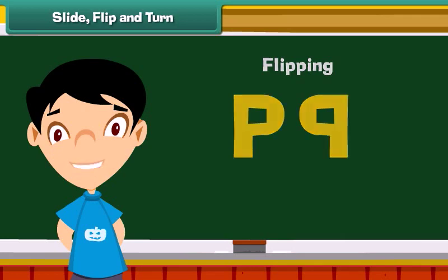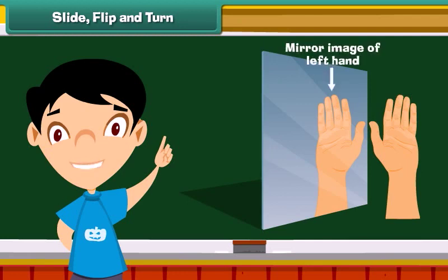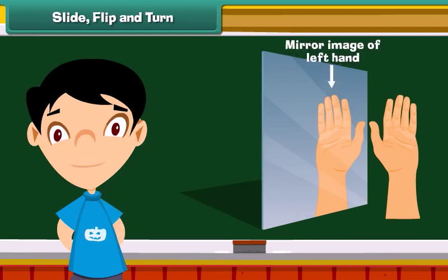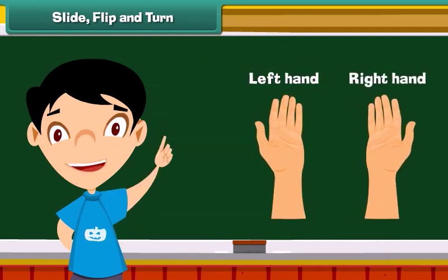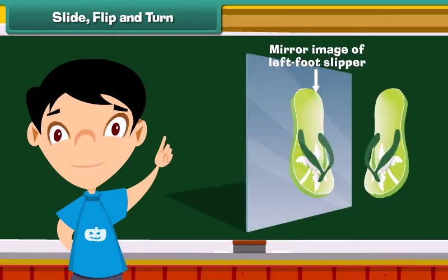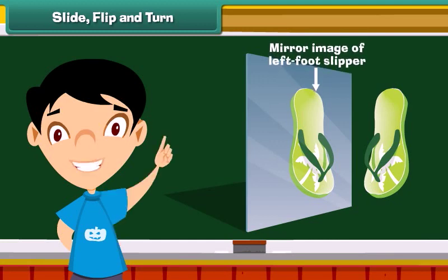Creating a mirror image of an object is flipping. In real life we come across many instances of flipping. For example, a right hand is a mirror image of our left hand — so if we flip our left hand, we get our right hand. Similarly, the right foot slipper is a mirror image of the left foot slipper. Flipping or sliding does not alter the shape of the object.